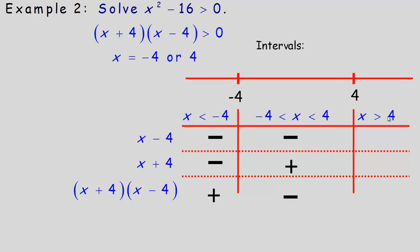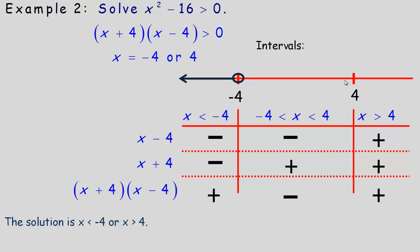Where x is greater than 4, for example x equals 5: 5 minus 4 is positive, and 5 plus 4 is also positive. A positive times a positive is positive. We're looking for where the function is greater than 0, so we want the positive intervals. The solutions are x less than negative 4 or x greater than 4. On the number line, we shade below negative 4 and above positive 4 with open circles, since there's no equal to.